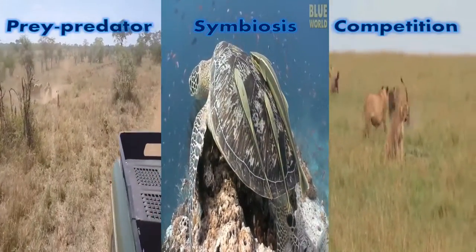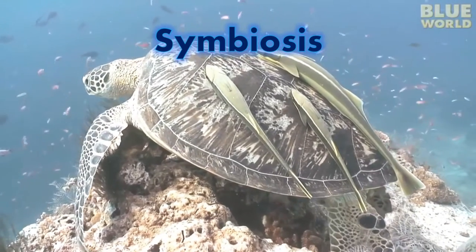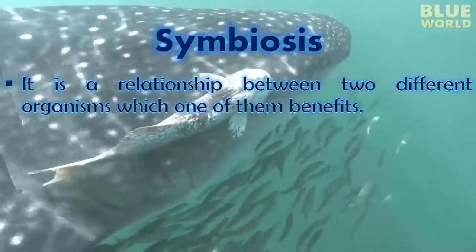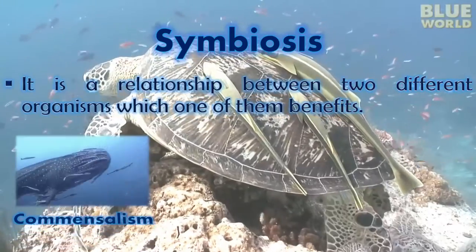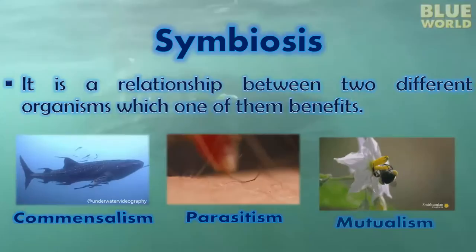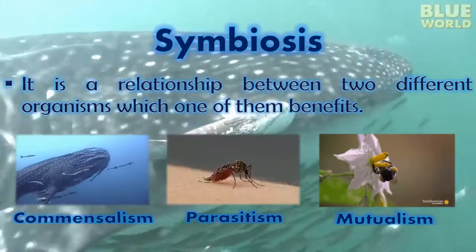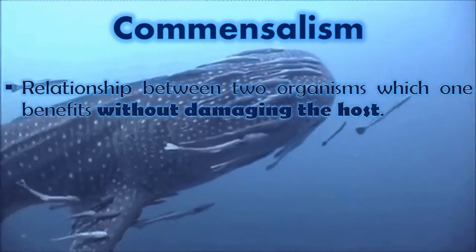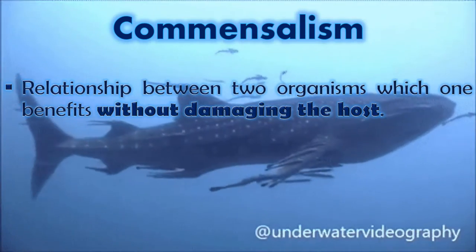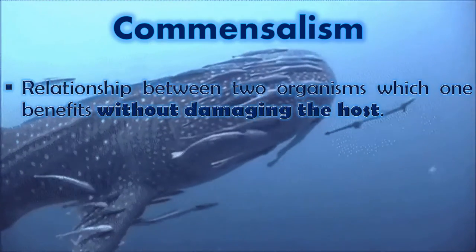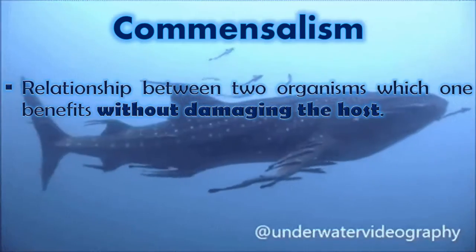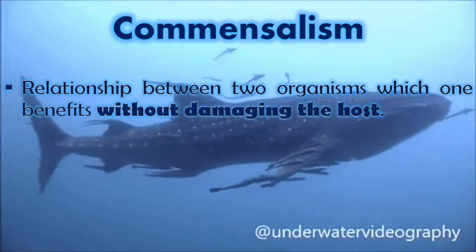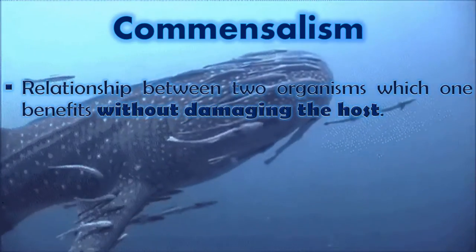Next is symbiosis. Symbiosis is a relationship between two different organisms. Which one of them benefits? There are three types of symbiosis: commensalism, parasitism, and mutualism. Commensalism is a relationship between two organisms in which one benefits without damaging the host. For example, remora fish is often found attached under or above the shark, because it gets food left by the shark without harming the host.